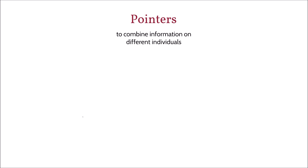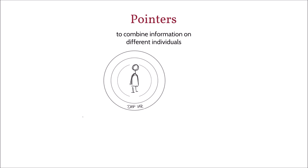The person you are focusing on in your research — in other words, the person for whom you are measuring the dependent variable — is identified via the PID. You can then use the pointer to merge information on other individuals which might be related to your outcome. The pointer to a person's partner in each particular year is the partner ID, PAR ID. It can be found in PPATH L.